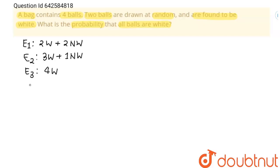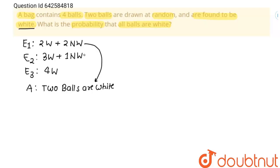Now I am going to define event A: two balls drawn are white. There are three cases, and since two balls drawn at random are found to be white, these two balls can be drawn from case one, case two, or case three. We have to find the probability of case three — that all balls are white.